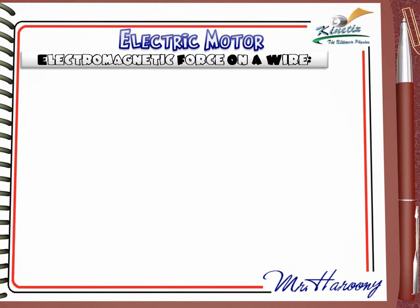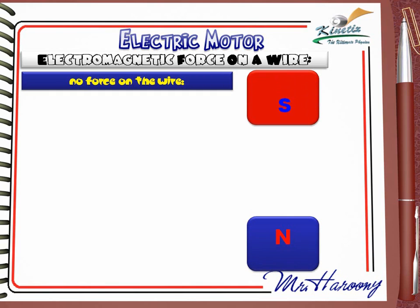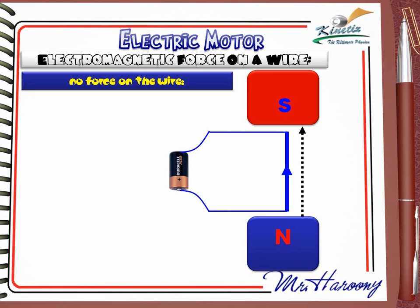Before ending, one last case must be discussed. There is a situation where a wire carrying electric current is placed inside a magnetic field but no force is applied to the wire. These are the poles of the magnet, and this is the wire. The dotted black arrow shows the direction of the magnetic field.